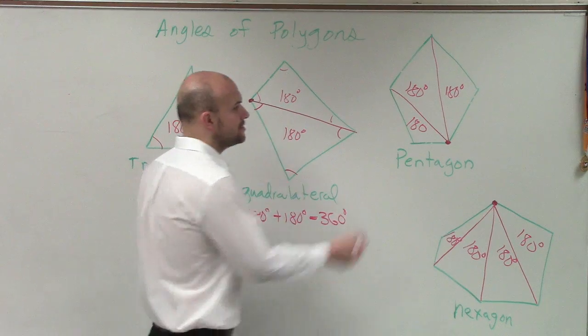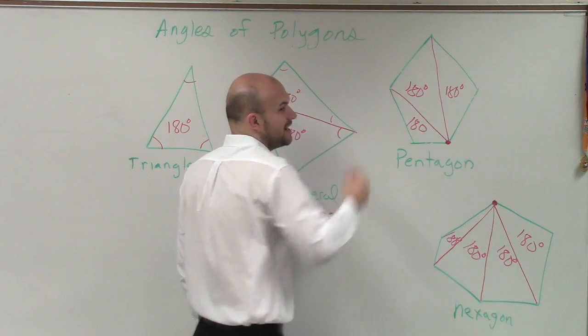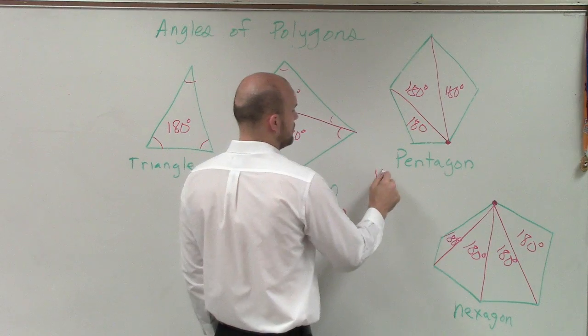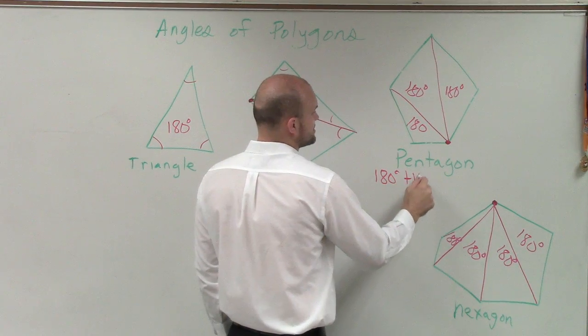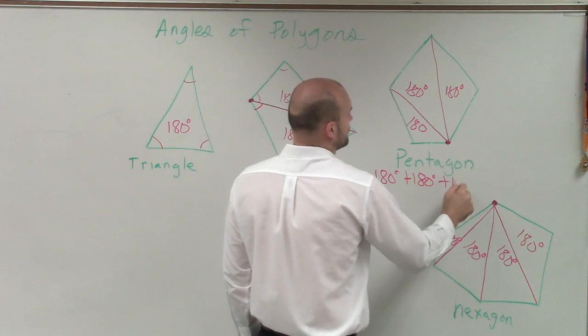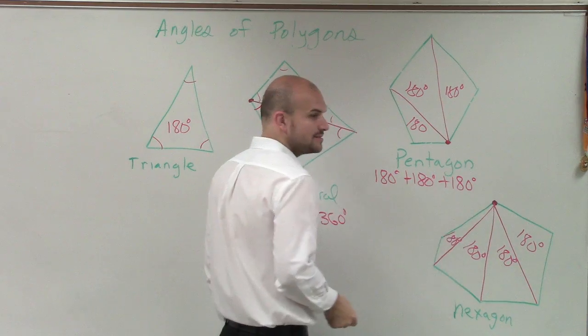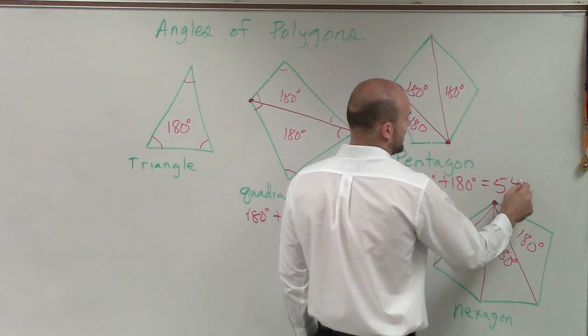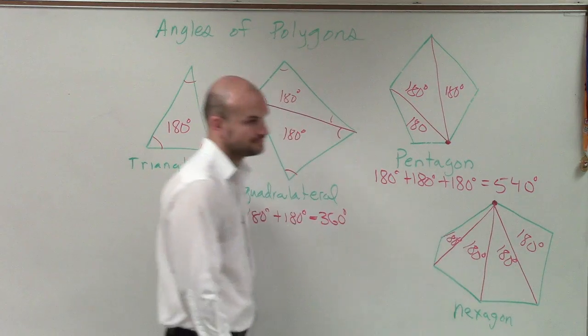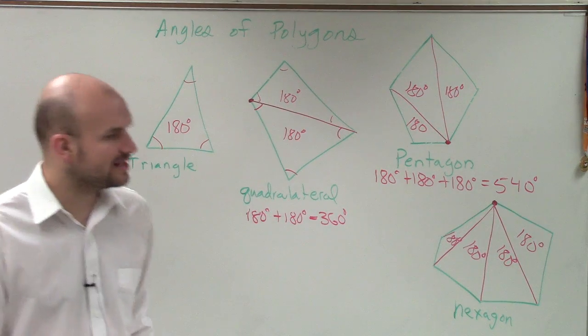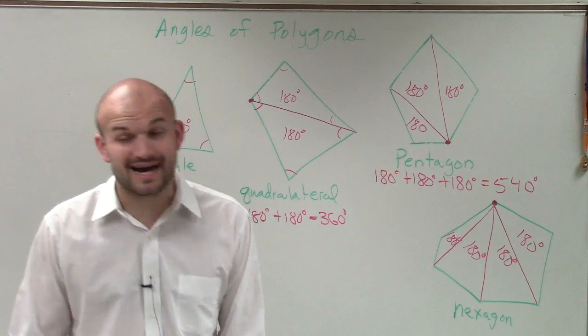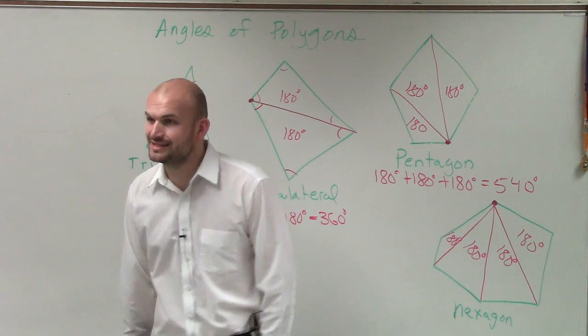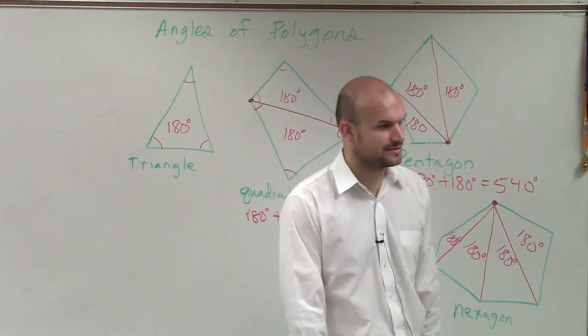OK, so a pentagon, you can see now we have three of them. So a pentagon would be 180 plus 180 plus 180 degrees, which equals 540 degrees. So if I ask you, what is the sum of all the angles of a pentagon, we need to make sure that we understand it's 540 degrees.